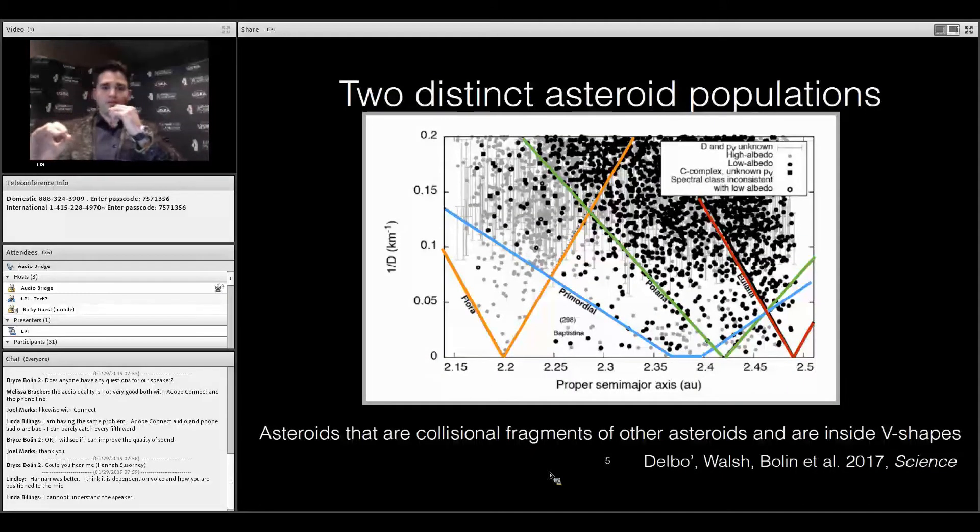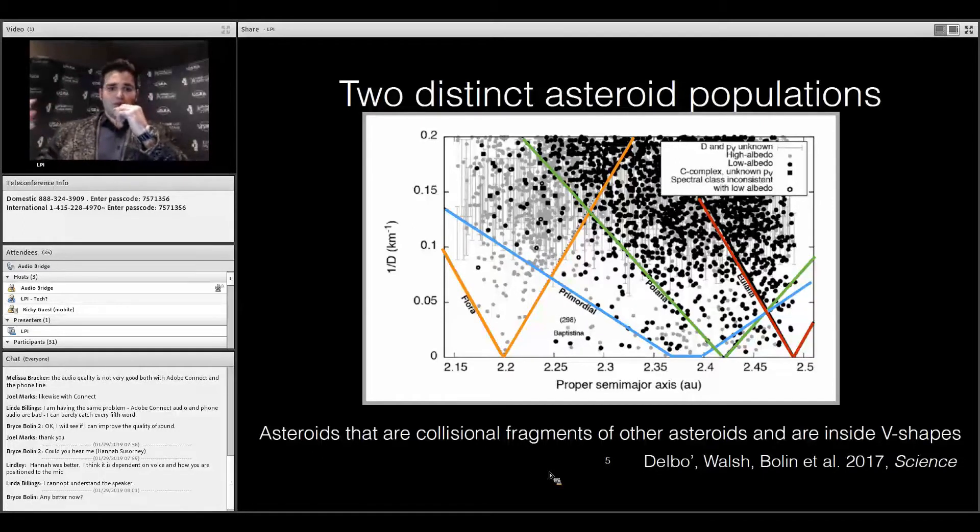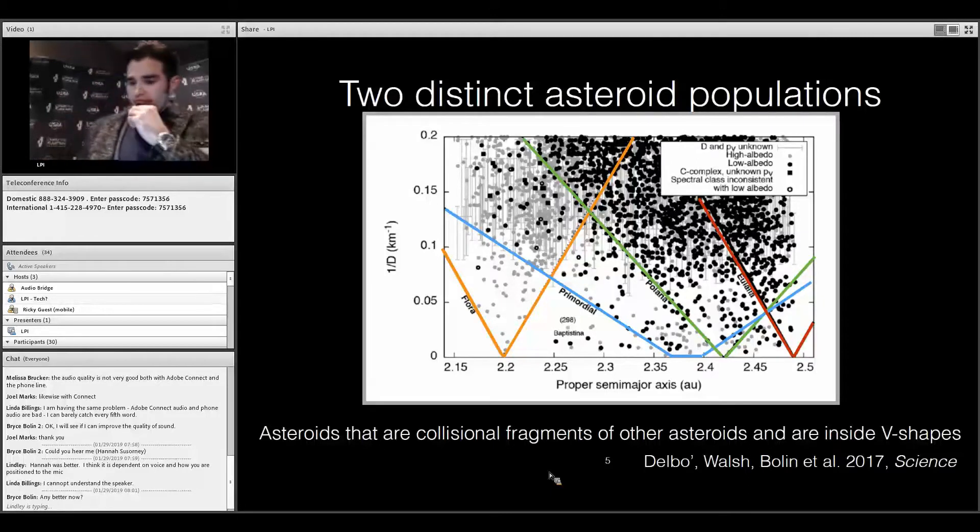The clues that can explain the formation mechanism come from the asteroids. We can divide the asteroids into two populations. One population is asteroids which are themselves fragments of other asteroids. These are the asteroids contained inside these shapes, the orange, blue, green, and red shapes here.